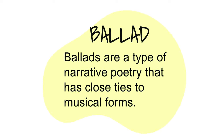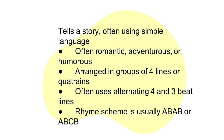Ballads are a type of narrative poetry that have close ties to musical forms. Ballads written as poetry can often easily be adapted as song lyrics. While ballads don't have tight formal construction like some other forms of poetry, there are enough distinguishing features to identify them as a form. Ballads tell a story often using simple language, dealing with romantic, adventurous, or humorous themes. They are arranged in groups of four lines or quatrains, often using alternating four and three beat lines, and the rhyme scheme is usually ABAB or ABCB.